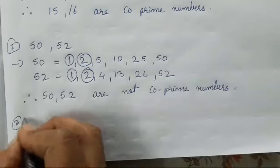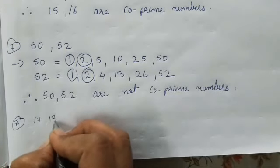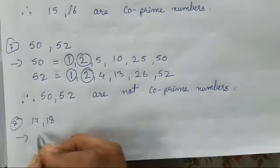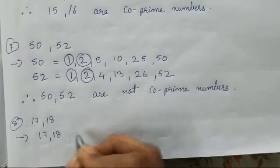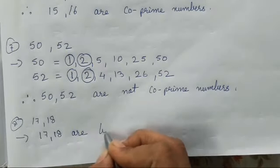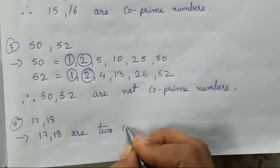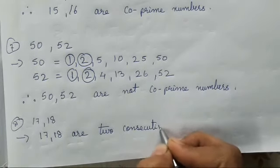All right. Now, the last one is 8th one which is 17 and 18. Again, 17 and 18 are two consecutive numbers.